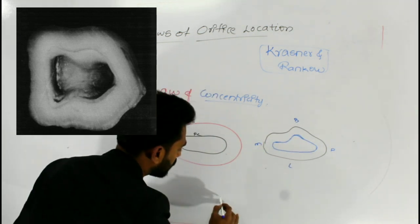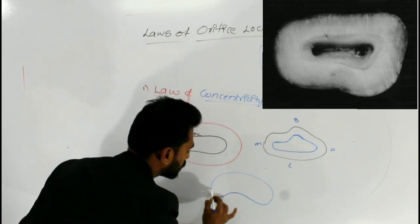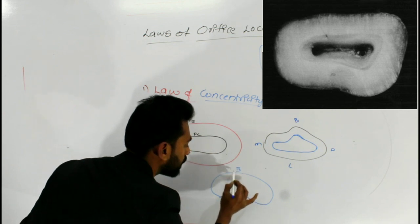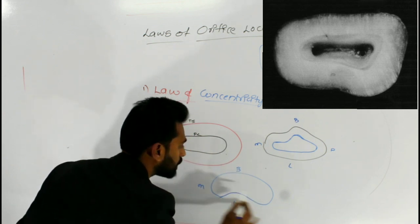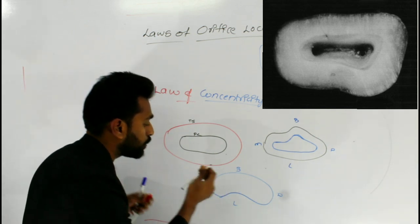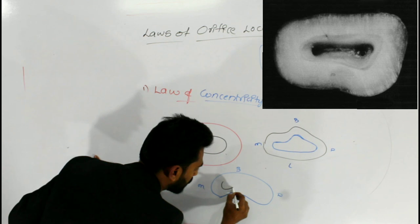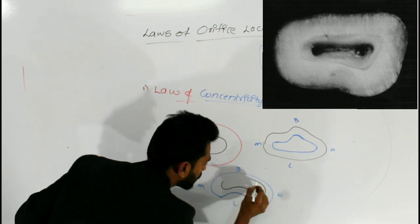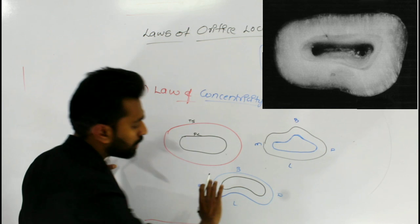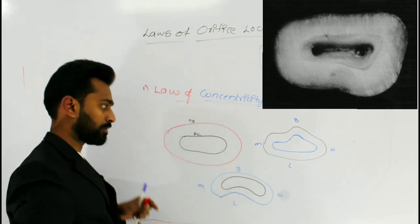Similarly, if there is a concavity or depression in the tooth structure on the lingual side — with buccal, lingual, mesial, and distal surfaces — the same depression or concavity is duplicated and represented in the pulp chamber. That means the pulp chamber is always concentric to the external tooth surface.